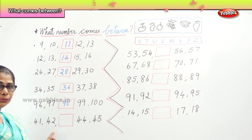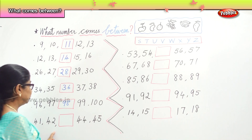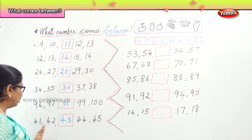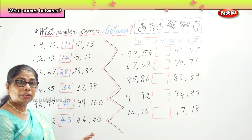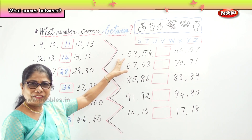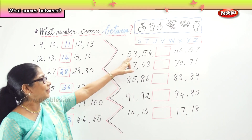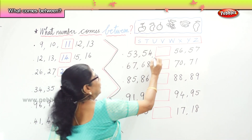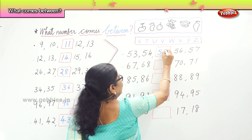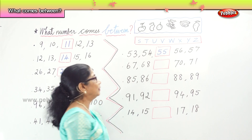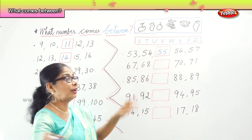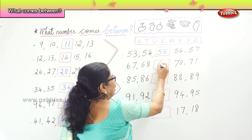Next: 41, 42, __, 44, 45. Very good — 43. So: 41, 42, 43, 44, 45. Next slot: 53, 54, __, 56, 57. Good — 55. Then: 67, 68, __, good — 69.